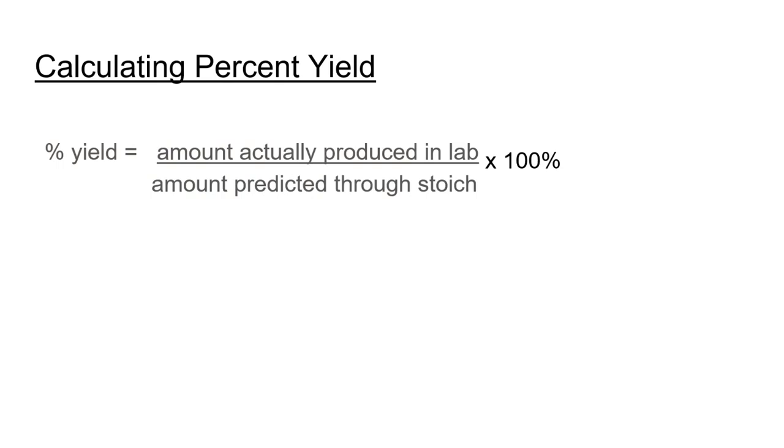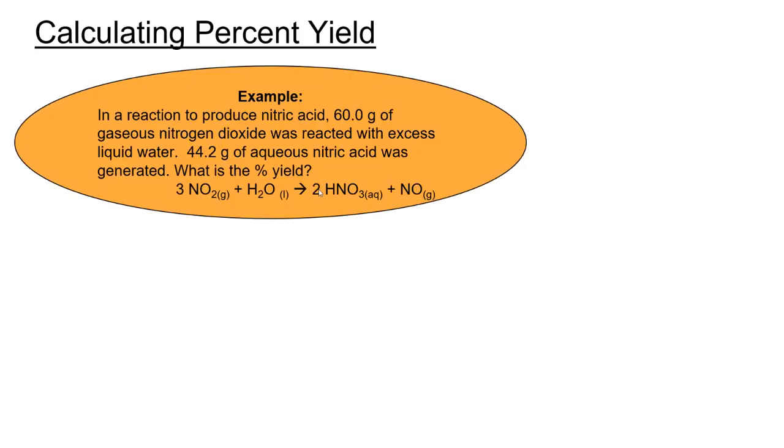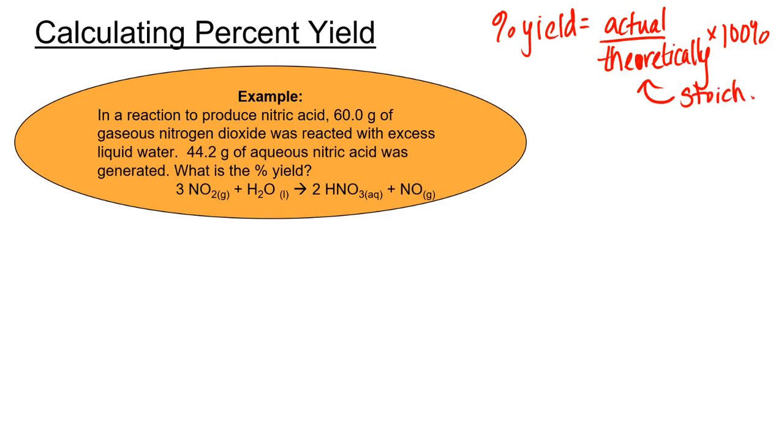Lots of times we're interested in calculating the percent yield of a reaction because reactions often do not make as much product as we would think or calculate that they do. There's an amount we actually make in lab versus what we predicted, what we should have made in lab. There's lots of places where product can be lost throughout experiments, and calculating percent yield can accommodate for just how much was lost. Percent yield is what was actually produced in the lab versus what was theoretically calculated times 100%. And that theoretical means from stoichiometry calculations.